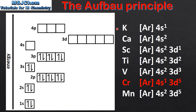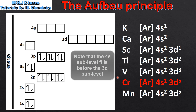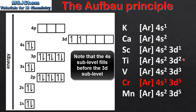Next we'll look at the electron configurations for potassium to manganese. I'm using abbreviated electron configurations but this time the noble gas is argon. Starting with potassium, we put 1 electron in the 4s sublevel. Next is calcium which is 4s2. We'll now move on to start filling the 3d sublevel, starting with scandium which is 4s2, 3d1. Next is titanium which is 4s2, 3d2. Moving on to vanadium which is 4s2, 3d3.